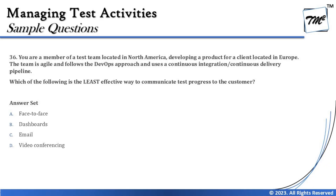The next question we have is question number 36, and it's talking about the way of communication. It says: you are a member of a test team located in North America developing a product for a client located in Europe. The team is agile and follows the DevOps approach, and uses a continuous integration and continuous delivery pipeline. Which of the following is the least effective way to communicate test progress to the customer?